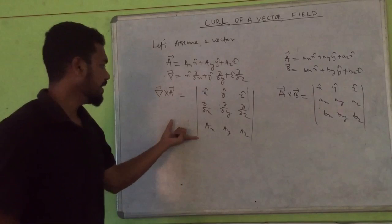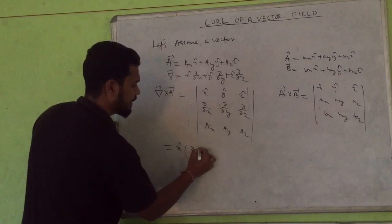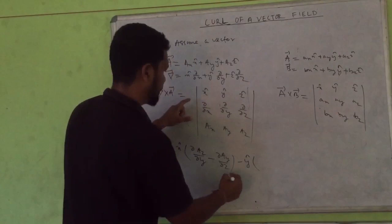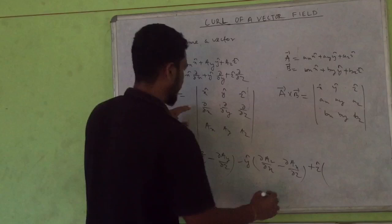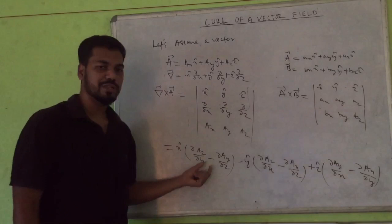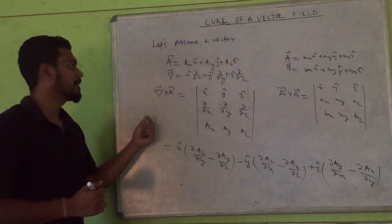After solving this determinant, we get the curl of the vector field. If you expand it, you will get: x-cap (del Az/del y − del Ay/del z) minus y-cap (del Az/del x − del Ax/del z) plus z-cap (del Ay/del x − del Ax/del y). You can easily calculate these partial derivatives to find the curl of a given vector field.